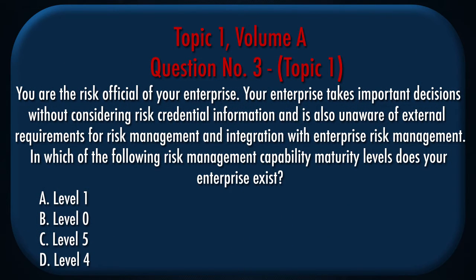Question number 3, Topic 1. You are the risk official of your enterprise. Your enterprise takes important decisions without considering risk credential information and is also unaware of external requirements for risk management and integration with enterprise risk management. In which of the following risk management capability maturity levels does your enterprise exist? A. Level 1. B. Level 0. C. Level 5. D. Level 4.